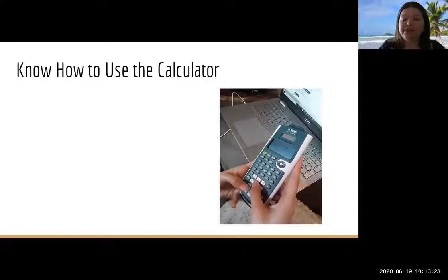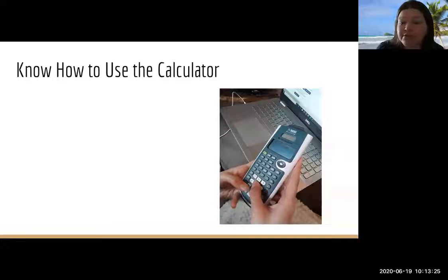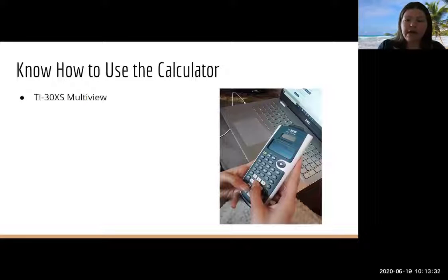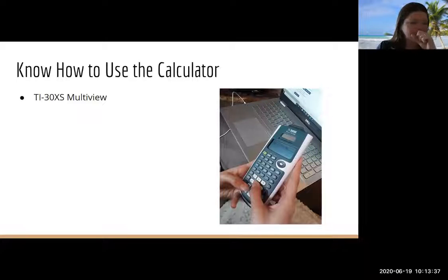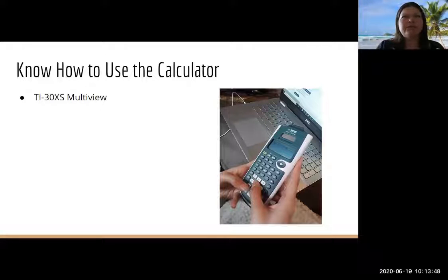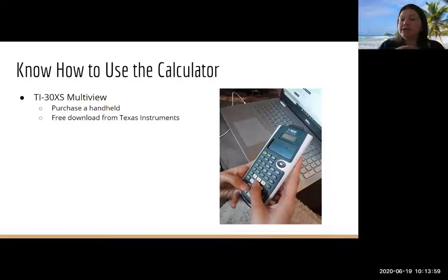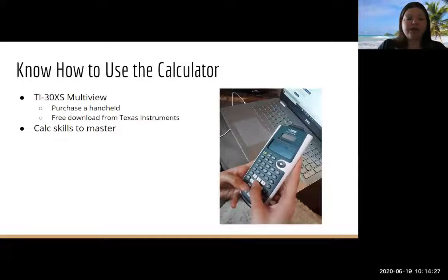So what do we need to know how to do? Well, first of all, I said 40 plus of those questions, you get a GED calculator. So you better know how to use the calculator. The calculator we get is a TI, that's Texas Instruments, 30XS multi-view. Be really careful. A lot of students go into stores and come out with a similar calculator that's not the same. TI-30XS2, don't get that one. Make sure you have the multi-view. And I highly recommend that you purchase a handheld one. They're usually less than 20 bucks so that you can get some practice. And what skills do you need to know how to master on the calculator?